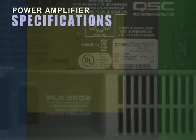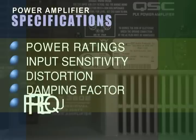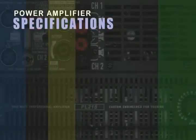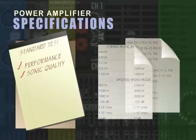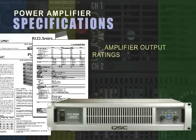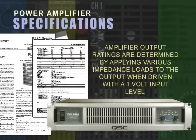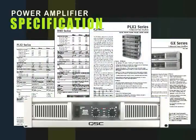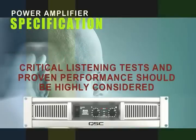Amplifier specifications include the device's power rating, input sensitivity, distortion, damping factor, and frequency response. Specifications document the device's performance and sonic quality based on industry standard tests. For example, amplifier output ratings are determined by applying various impedance loads to the output when driven with a 1 volt input level. An amplifier specification should be considered when selecting an amplifier but should not be the sole criterion. Critical listening tests and proven performance should be highly considered.